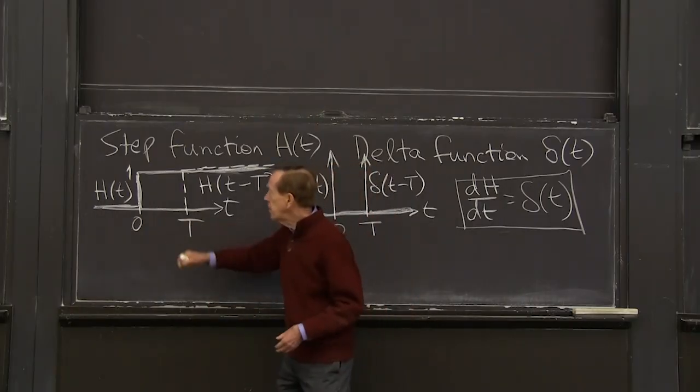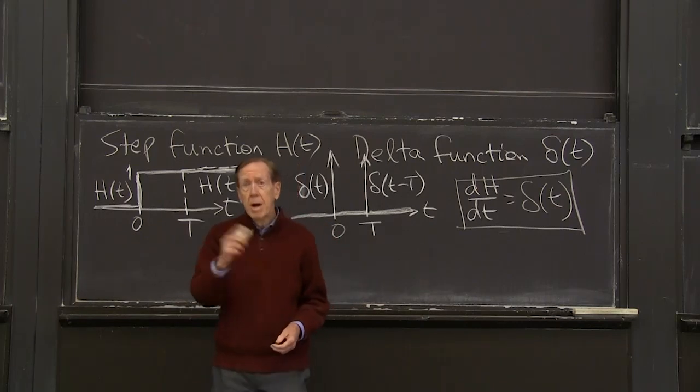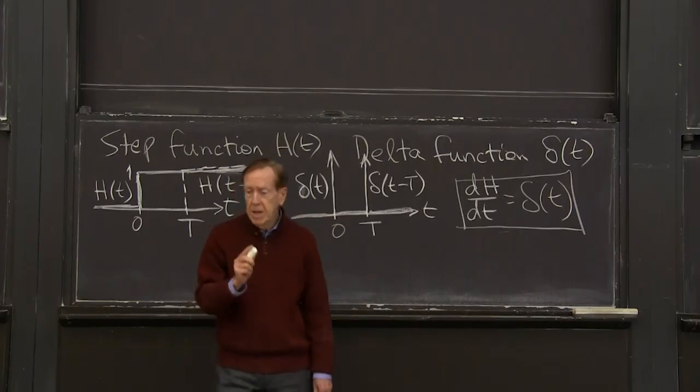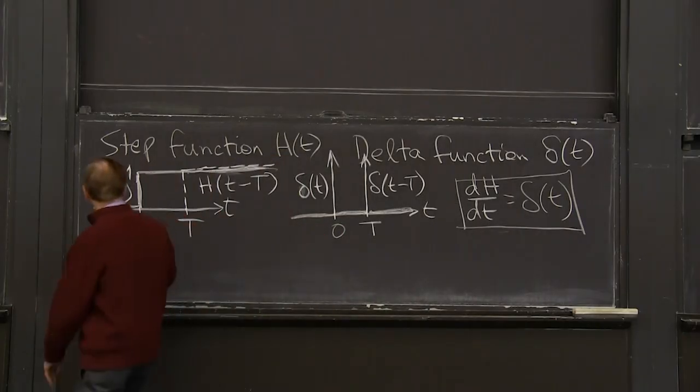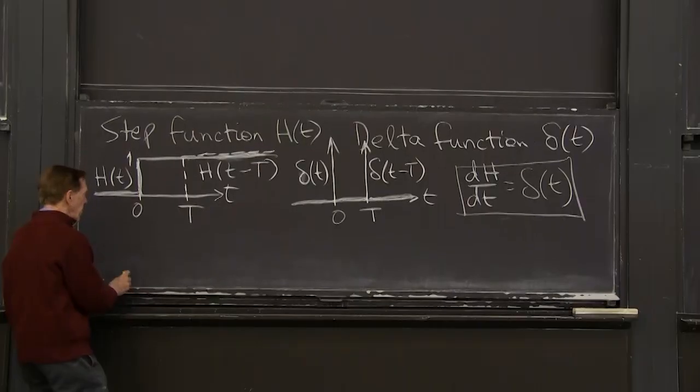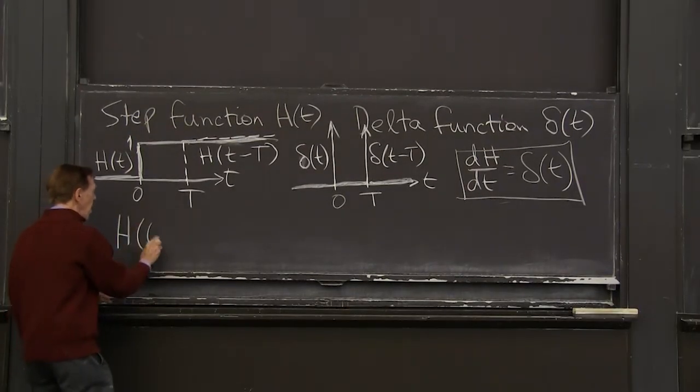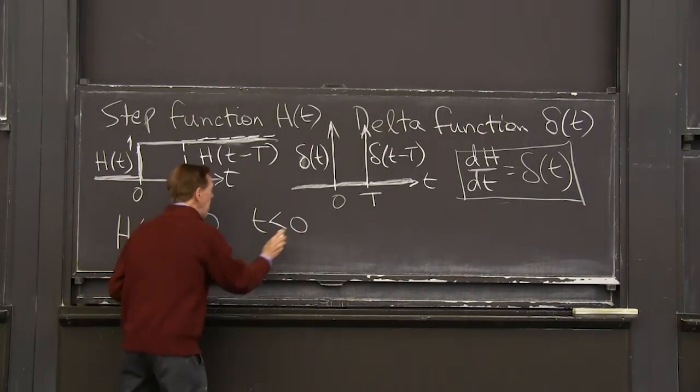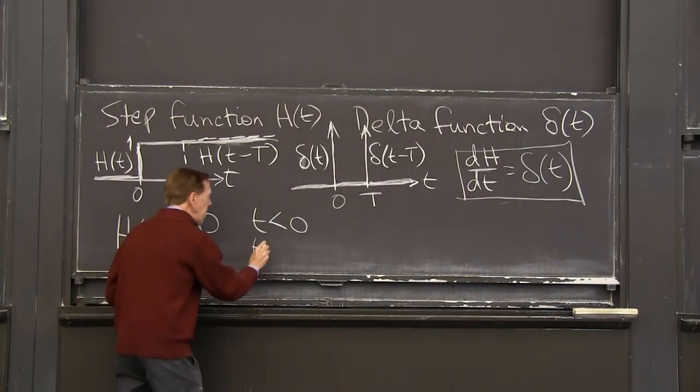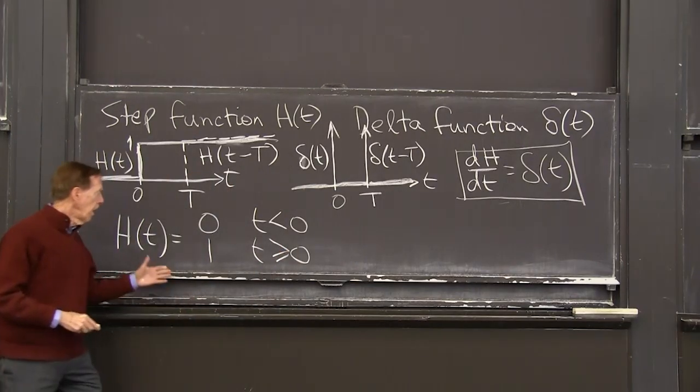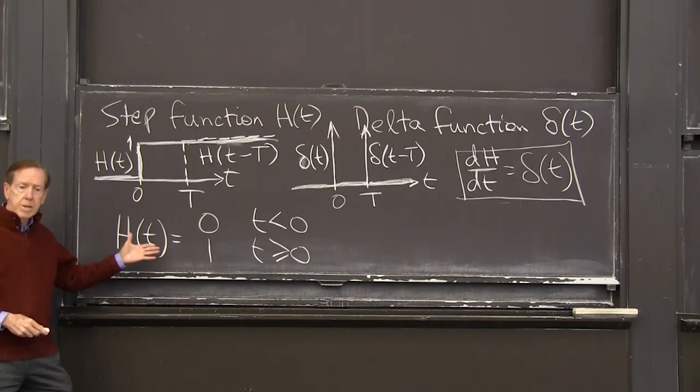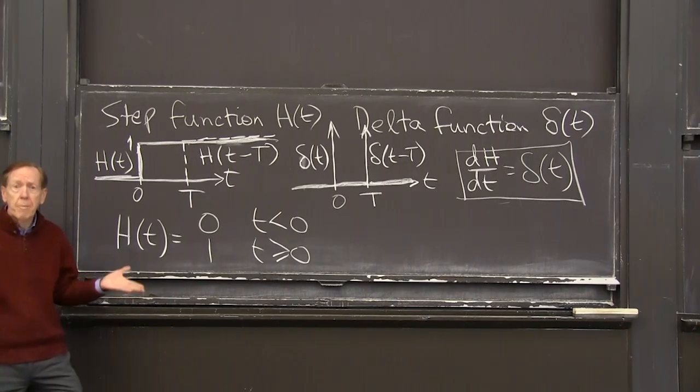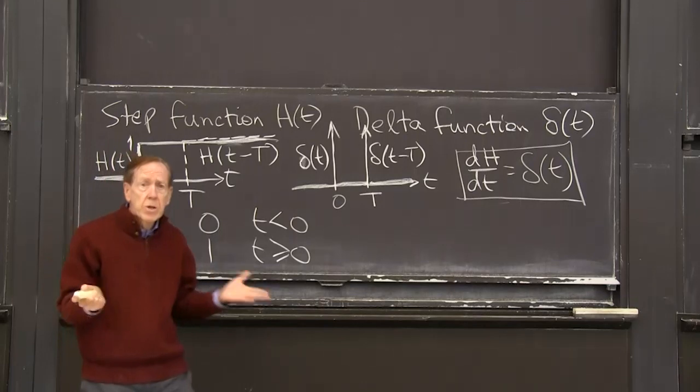So the first one is the step function. And I'll call it h after its inventor, who was an engineer named Heaviside, started with an h. And the step function, let me write the formula. h of t is 0 for t negative and 1 for t greater or equal 0. So that's the step function just has two values, and it has a jump. You could say jump function also.